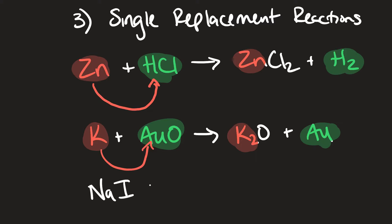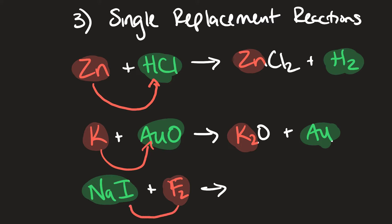Another example: NaI plus F2. We have a compound reacting with an element. Fluorine is a non-metal, so it's going to replace the non-metal of the compound — fluorine replaces the iodine. At the end you have NaF plus iodine sitting by itself. That's the gist of single replacement reactions.